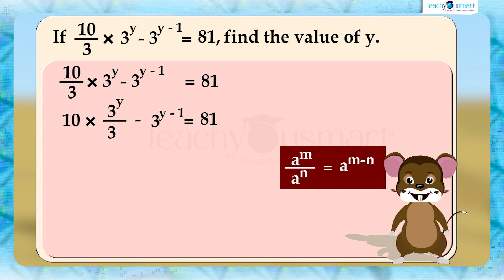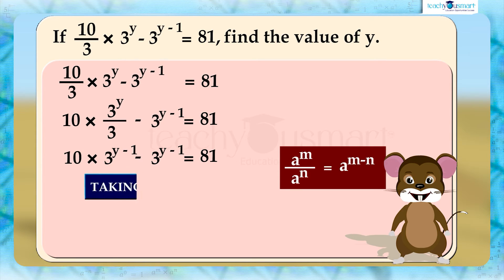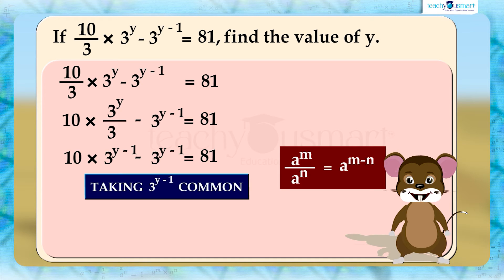By applying a raised to m divided by a raised to n equals a raised to m minus n, we get 10 multiplied by 3 raised to y minus 1, minus 3 raised to y minus 1, equals 81. Since 3 raised to y minus 1 is common in both terms, we can rewrite it as 3 raised to y minus 1, multiplied by 10 minus 1, equals 81.